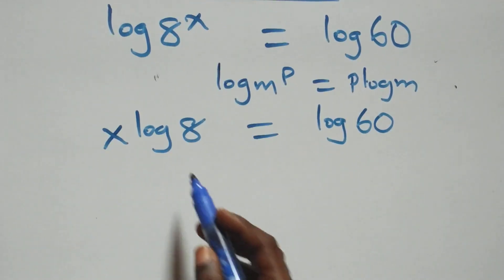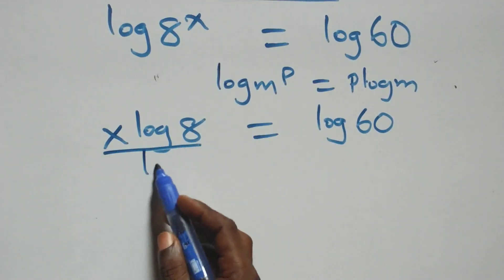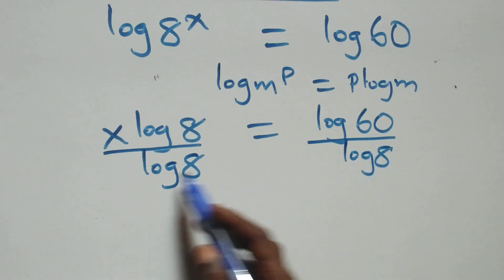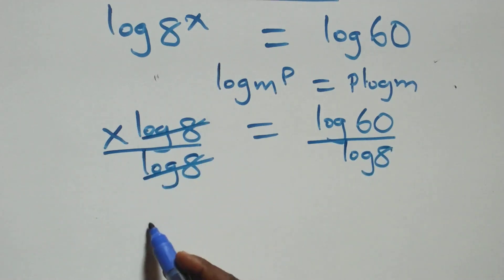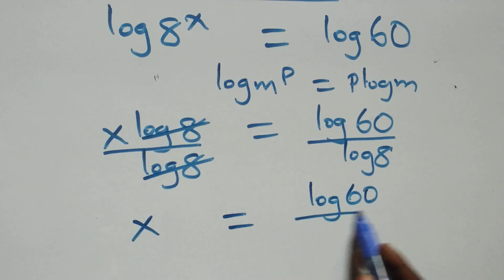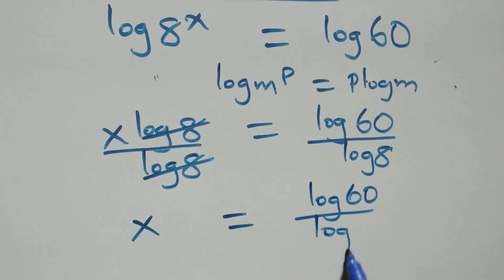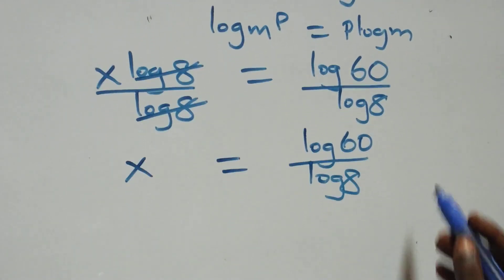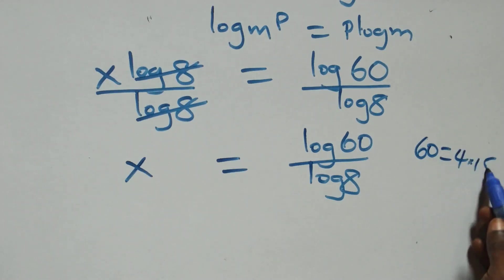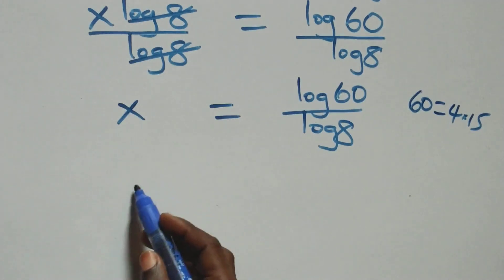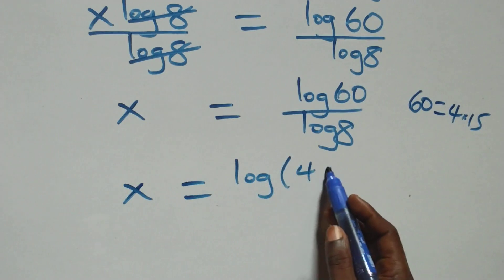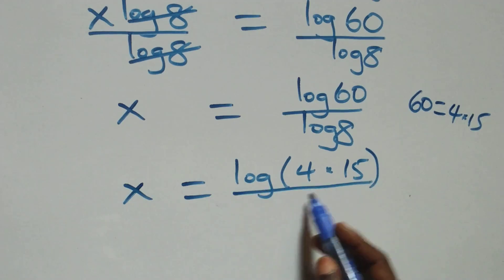The next step here, we divide both sides by log 8. The log 8 cancels and we have x left, which is equal to log 60 over log 8. In the next step, we can write 60 as 4 times 15, so all we have becomes x equals to log(4 times 15) over log 8.